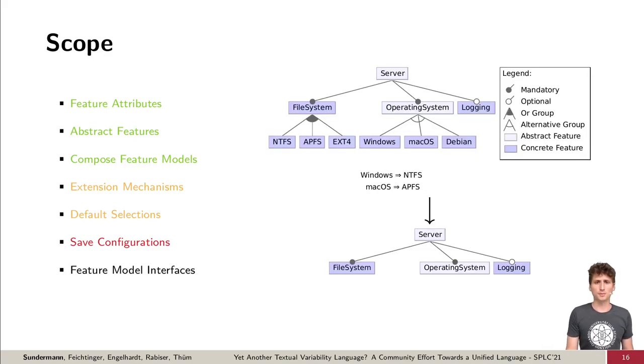If we compose feature models, it is possible that we do not require every detail of a submodel. In this case, we could use a feature model interface that hides certain information from the composed model. However, the participants voted that it should not be included in the first version, so we excluded it.